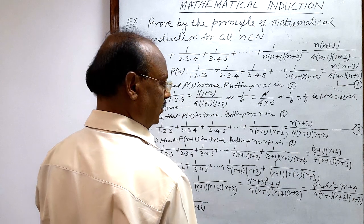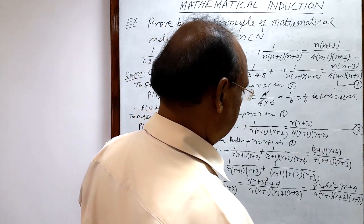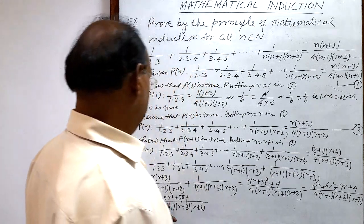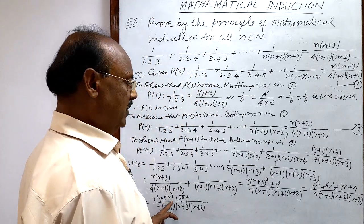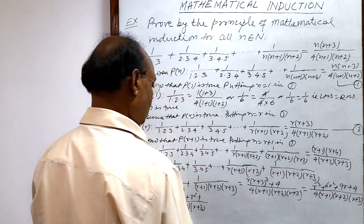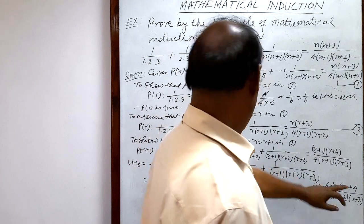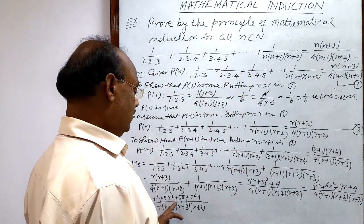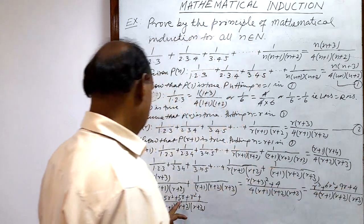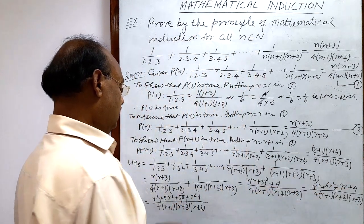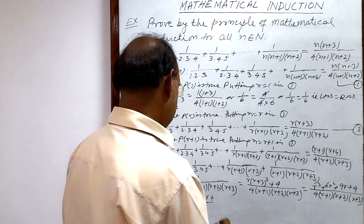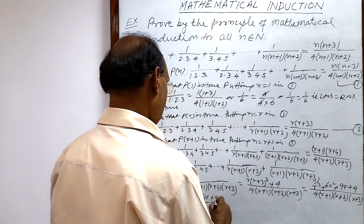We have 6r² which we split as 5r² + r². We write the numerator as r³ + 5r² + 4r + r² + 5r + 4. We are writing 9r as 4r + 5r, and 6r² as 5r² + r², so we obtain the correct grouping.